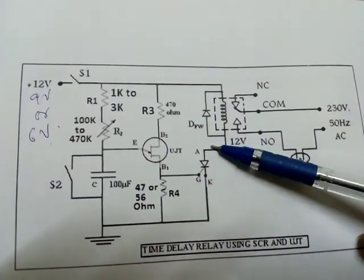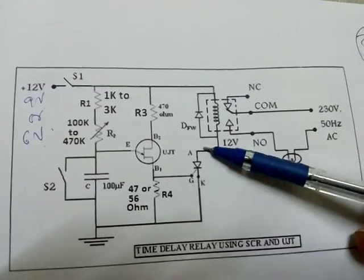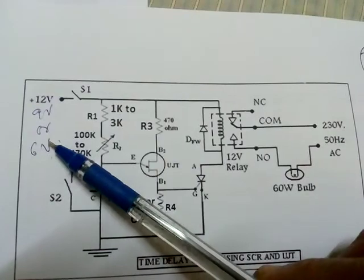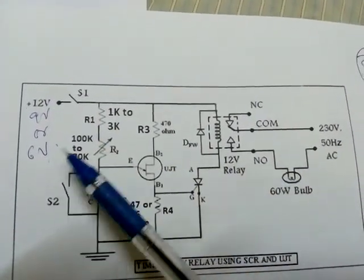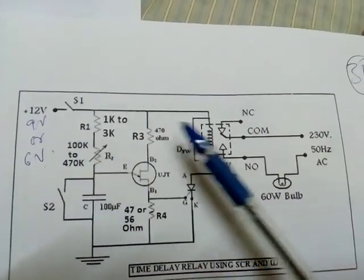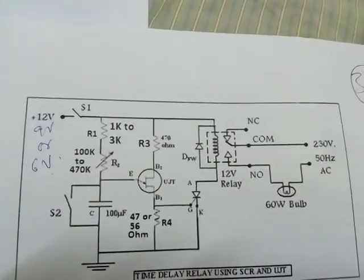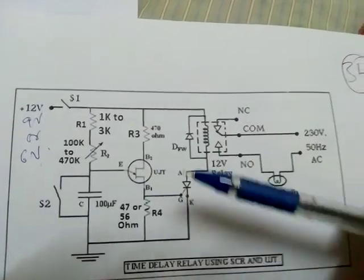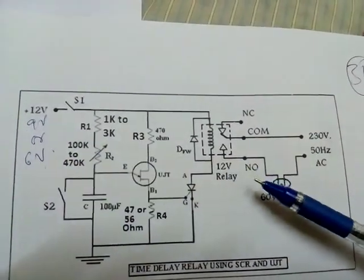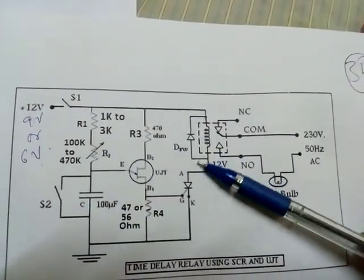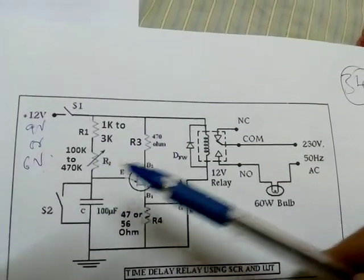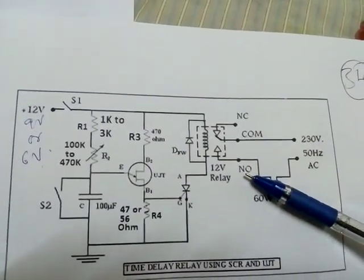Short the SCR, means short from anode to cathode. Then, gradually increase this voltage. AC should be on. Gradually increase the voltage to 6V, say 7V. This bulb will glow. It indicates the relay is of 6V. If it takes around 9V for the bulb to glow, it means the relay is 9V. If it takes 12V to glow, it means the relay is 12V.